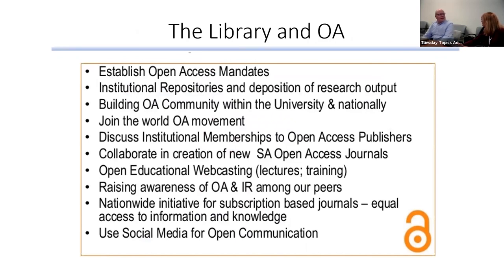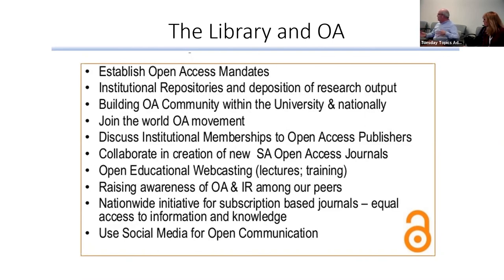Right now there is no effort to establish an open access mandate at Drexel — that would need to come from the Faculty Senate, not the library. But if anyone is interested, we're happy to talk about it and see if we can be involved in discussions. That's definitely a faculty-driven discussion. Institutional repositories are great, especially for green open access, which involves depositing an author accepted manuscript — and that's something that faculty can take advantage of.